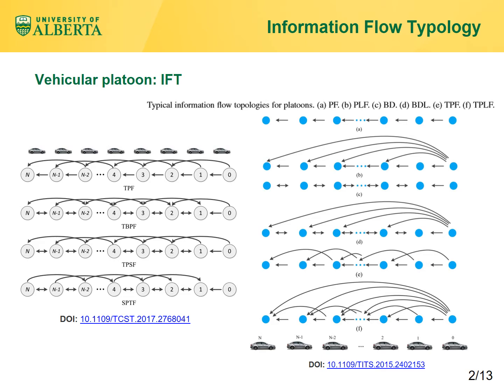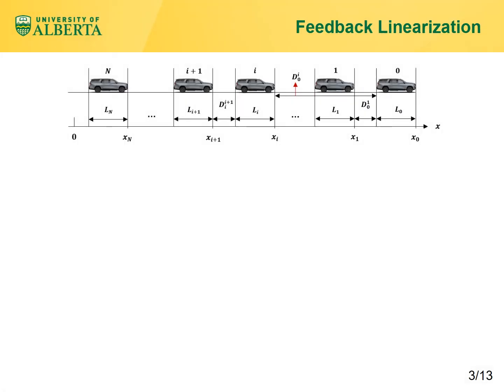The schematic of a platoon with one leader labeled zero and n followers labeled one to n is shown here. x denotes the position of vehicles, and capital D subscript i superscript i+1 denotes the distance between the back of the predecessor vehicle i and the front of the follower vehicle i+1.